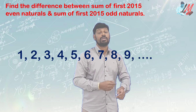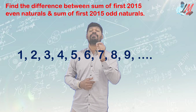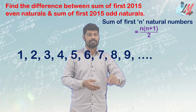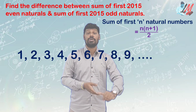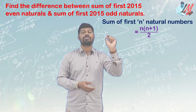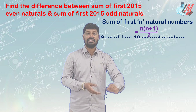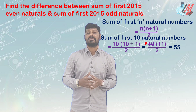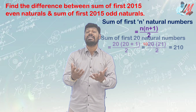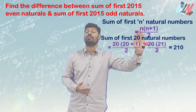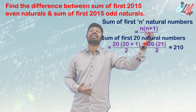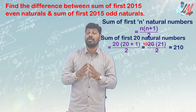The sum of the first N natural numbers is equal to N(N+1)/2. For example, if you have 10 natural numbers: 10(10+1)/2 = 55. For 20 natural numbers: 20(20+1)/2 = 10 × 21 = 210.